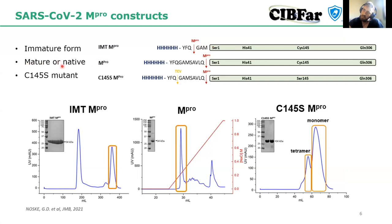We also produced the mature form of the enzyme using a standard method where a self-cleaving sequence is added to the N-terminal, allowing the protein to cleave itself and form an authentic N-terminal. We also explored the C145S mutant containing the N-terminal sequence that is part of NSP4, making a protein that was inactive but contained the N-terminal extension. These proteins behave really differently in solution and biochemistry, and we had to characterize all those behaviors.